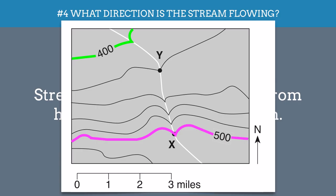Now what that means is that the river has to be going from the higher point to the lower point. Or in other words, it's flowing like this, towards the north.